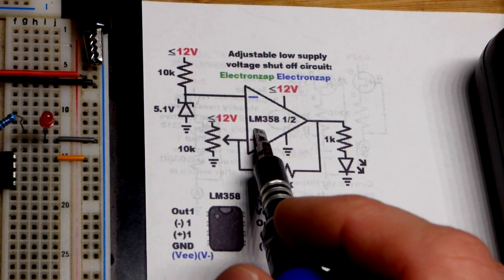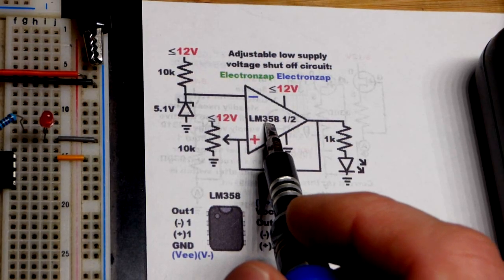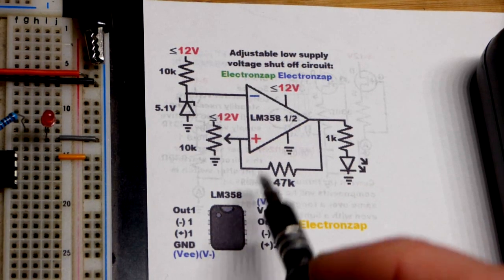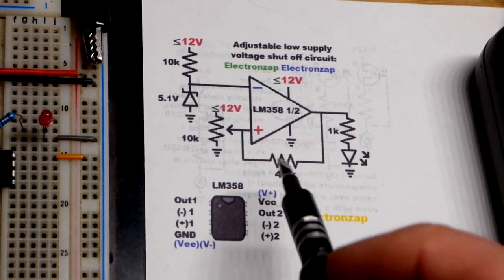So now we're zooming in on the schematic I drew. We got the LM358 that we're using. That is an op amp. There's two op amps in the integrated circuit. We're using one out of two of them, the one on the left right there.